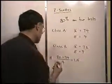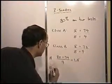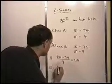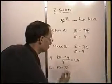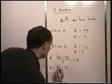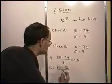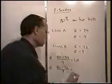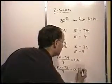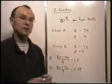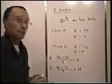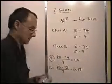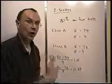Now for class B we do the same thing: score of 80 minus the class average of 72, divided by the deviation of 9. I calculated this in advance and got 0.89 — not even one deviation above average. So in which class did this student do better and should be prouder? Class A, because they were considerably farther above average.